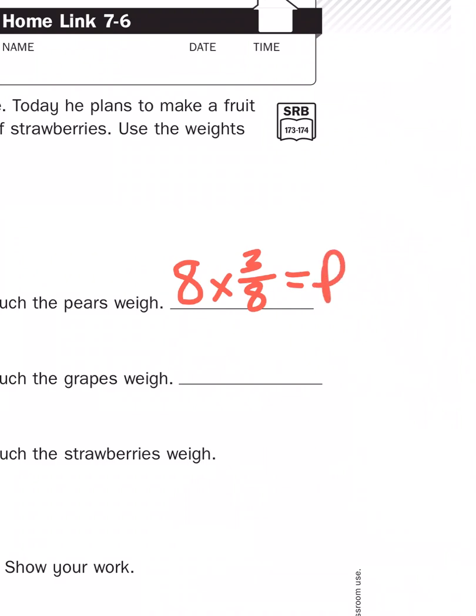So knowing that I'm creating a multiplication problem, I just have to take my two numbers, which is eight pears times the weight per pear, which is three-eighths of a pound, equals, let's say p for pears. That's our unknown. Now because we are multiplying a whole number with a fraction, all I have to do is think about and concentrate on the numerator of my fraction. Because when I'm grouping eighths, I have eight groups, and in each group I have three-eighths.